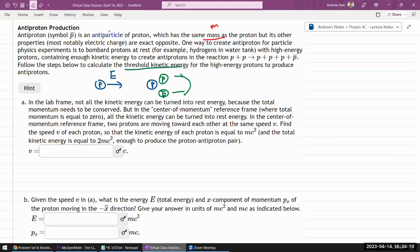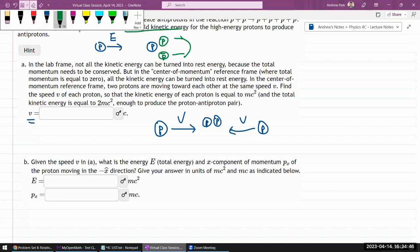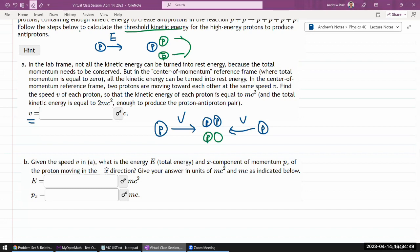In the lab frame, not all the kinetic energy can be turned into rest energy because the total momentum needs to be conserved. In the center of momentum reference frame, I have two proton beams coming in with the same speed, and after collision all the kinetic energy can be turned into rest energy equal to 2mc² enough to produce the proton-antiproton pair.